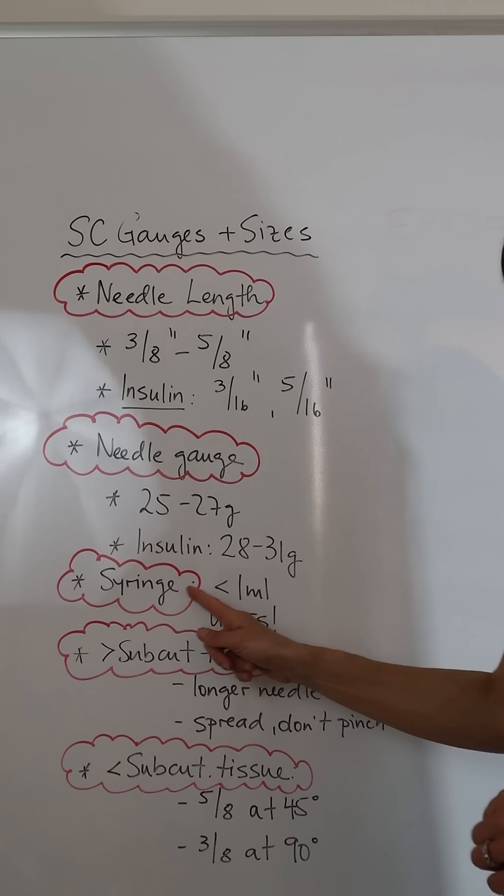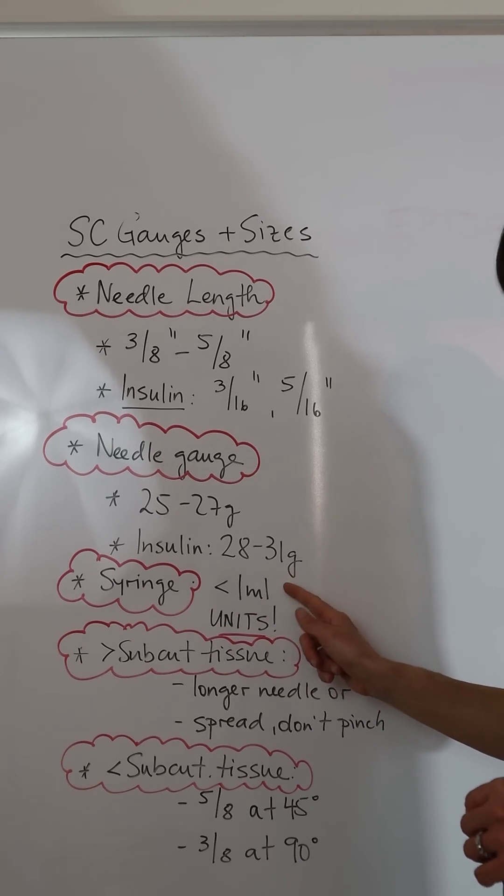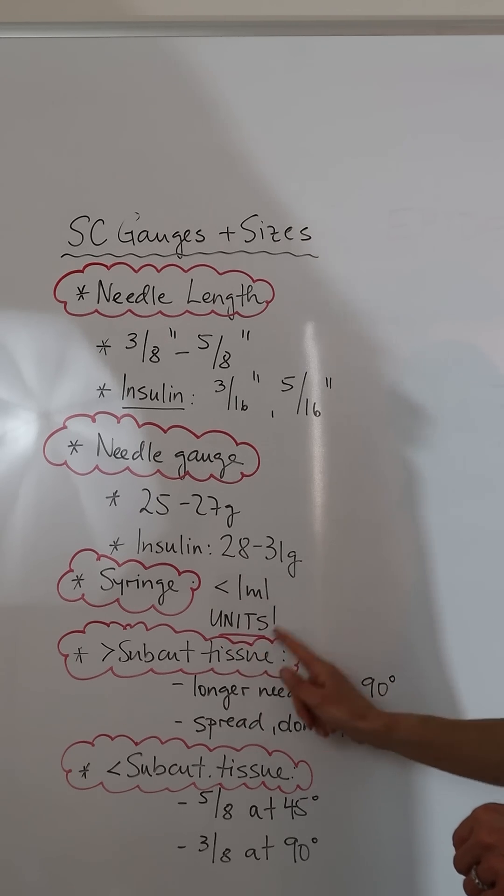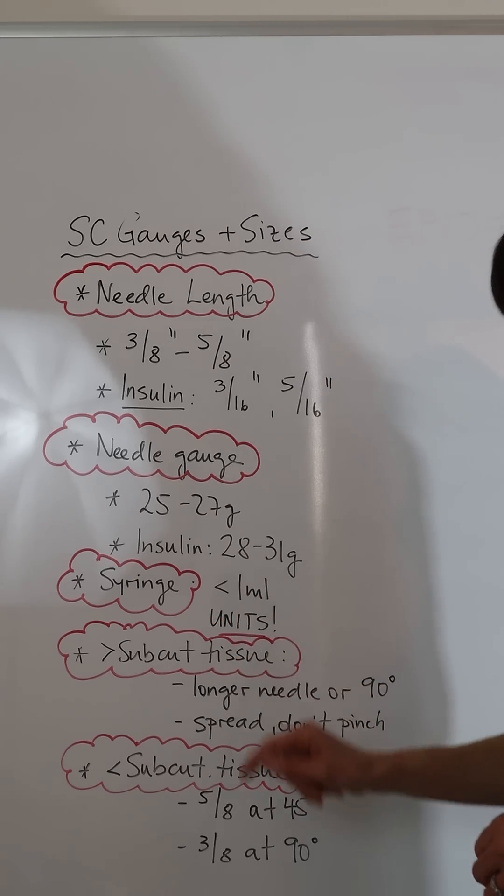The syringe size for small volumes is usually less than one milliliter, and make sure that you use the right syringe with the units marked on it for insulin.